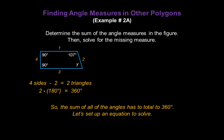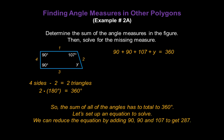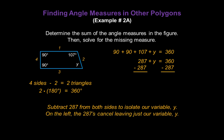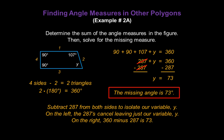Let's set up an equation: one 90-degree angle, plus the other 90-degree angle, plus the 107-degree angle, plus the missing angle y, all have to total 360. Adding 90, 90, and 107 together gives us 287 plus y equals 360. Subtract 287 from both sides — the 287s cancel, leaving just y, and on the right, 360 minus 287 is 73. So y equals 73, or the missing angle is 73 degrees.